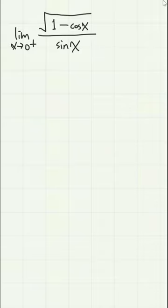Let's find the limit of square root of 1 minus cosine x divided by sine x as x approaches 0 from the right. Let's use L'Hôpital's rule, which is a very powerful tool when finding a limit.